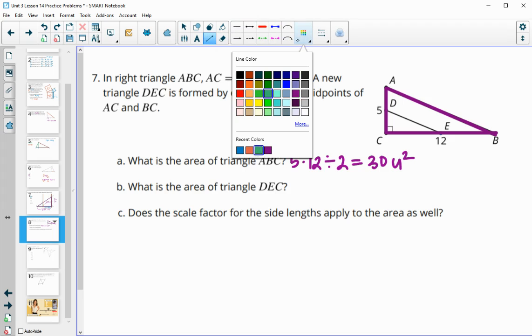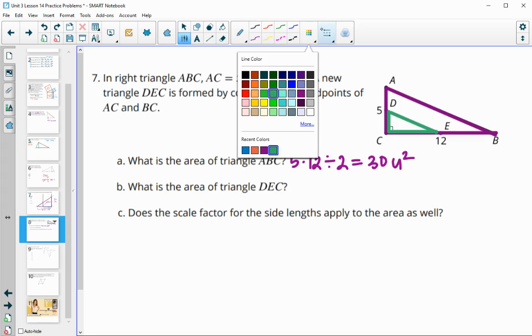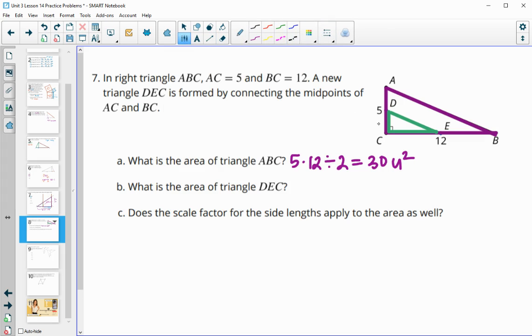Then we'll figure out the area of triangle DEC. So DEC is this little triangle here formed by the midpoints. We know with this one that this side is half of AC, so this is 2.5. And this one is half of 12, so this one is 6. So we will do 2.5 times 6 divided by 2, and we get 7.5 units squared for that triangle.